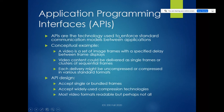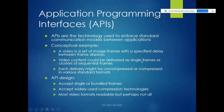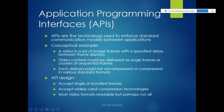APIs — Application Programming Interfaces — are the technology that enforces the standard communication model between applications. A simple example: suppose you're playing a video. A video is just a set of image frames with a specified delay between frame displays. For example, if you're showing 25 frames per second, every 0.04 seconds you'd know it's time to show a new frame. You could either send single frames one at a time, or send clusters of sequential frames. There are various ways the data could be sent and compressed in various video formats, and the interface is going to allow a variety of popular styles.